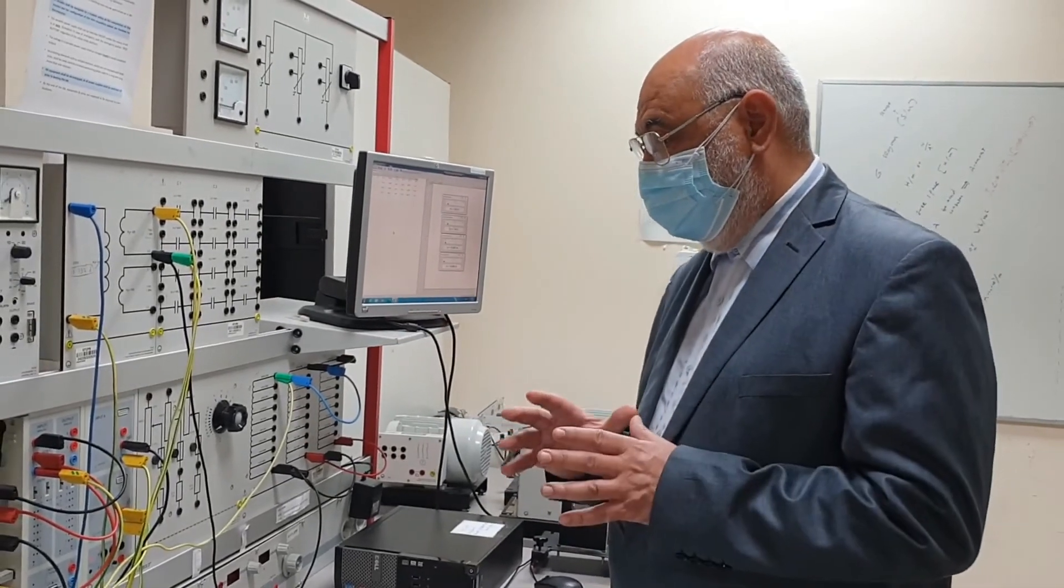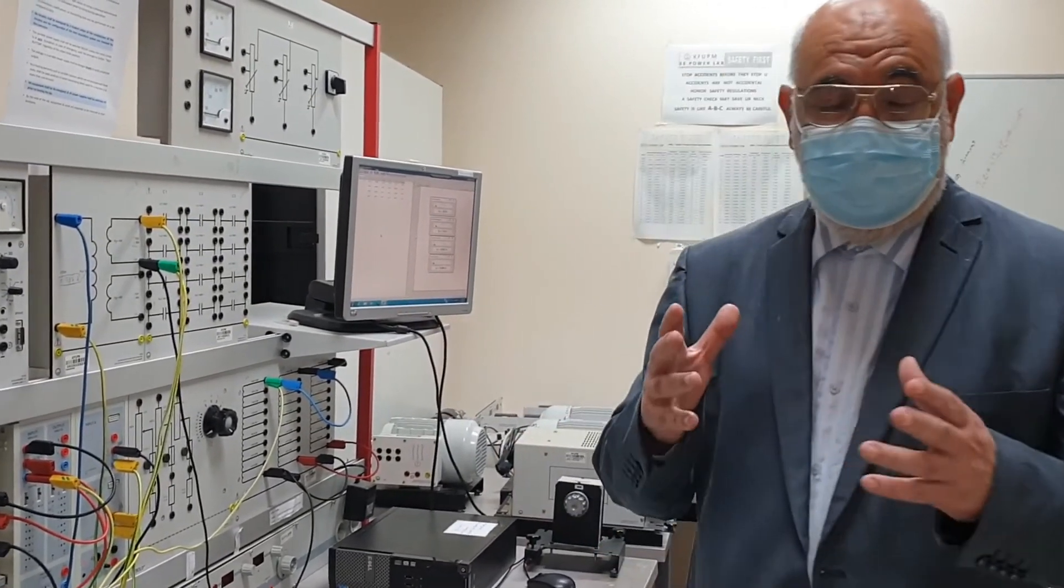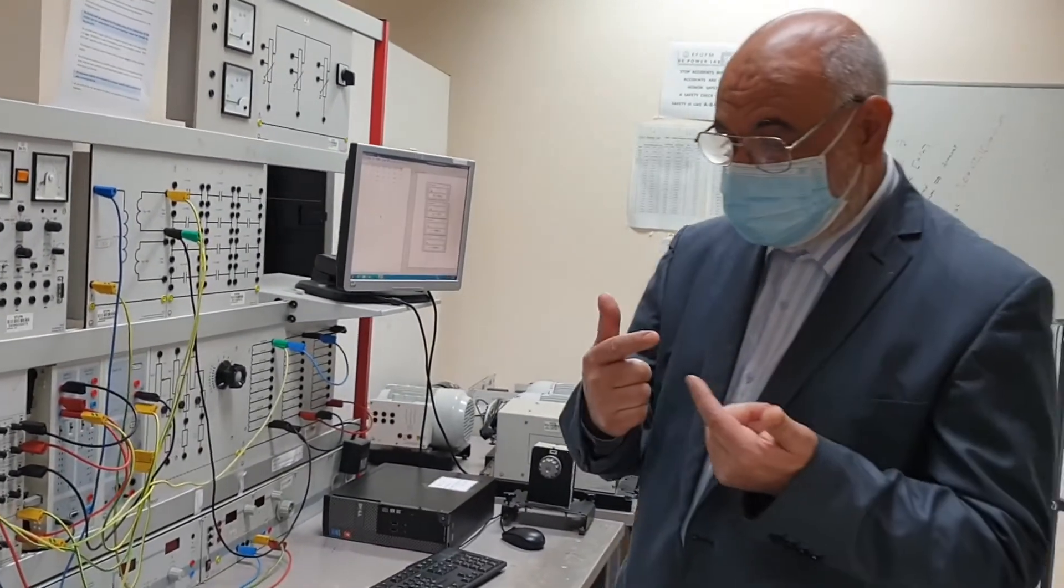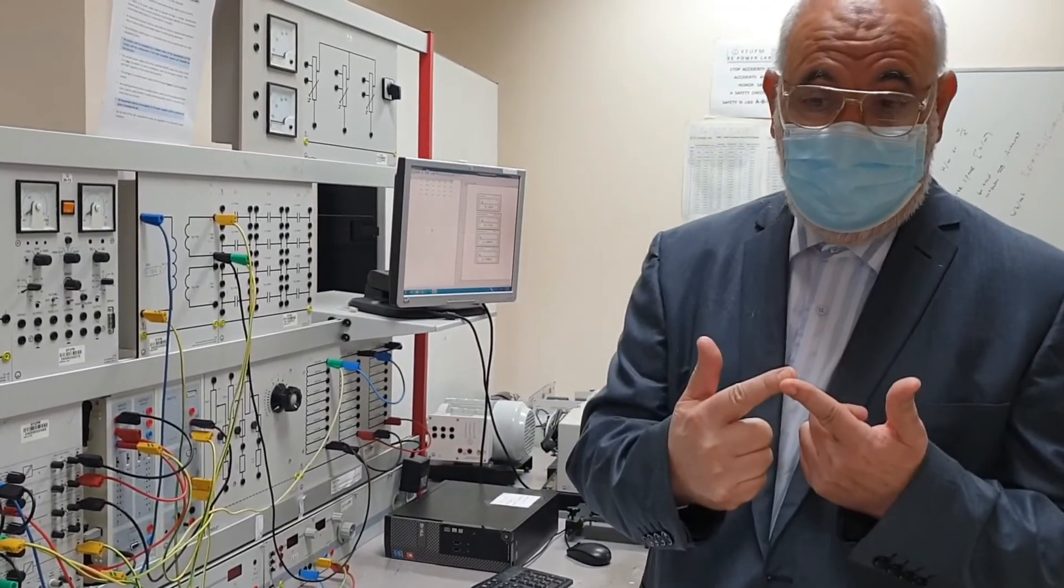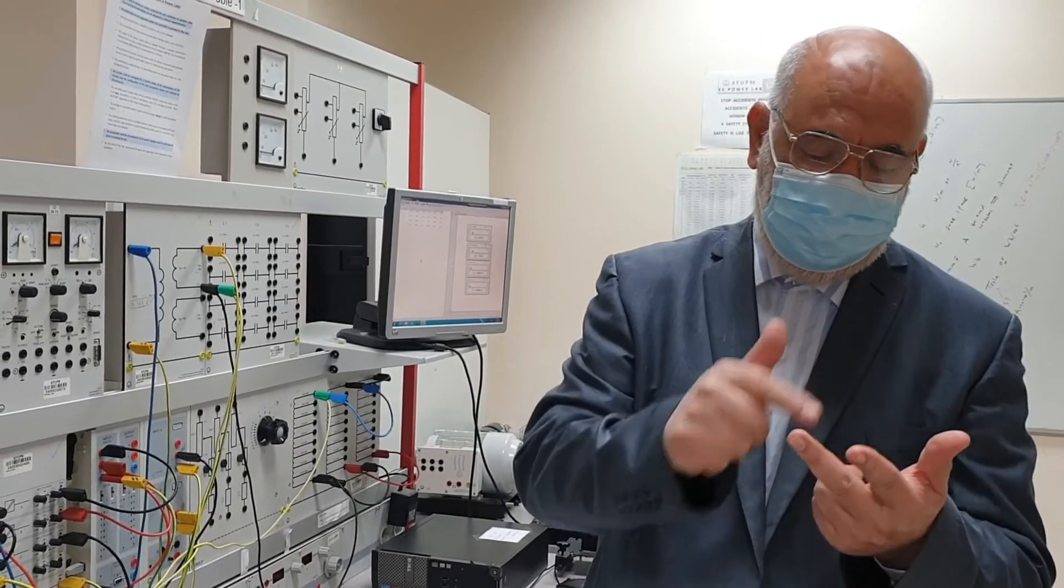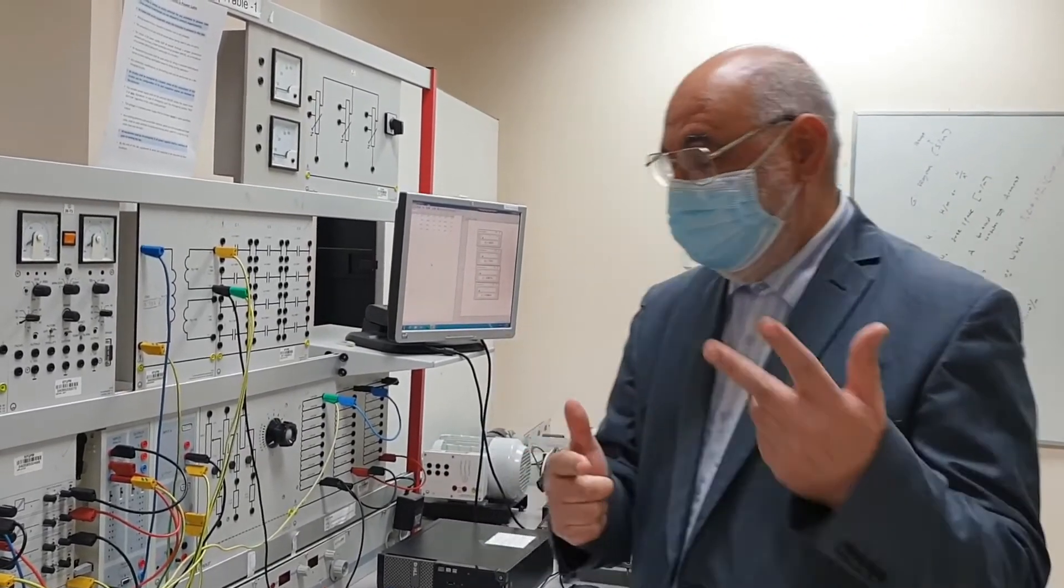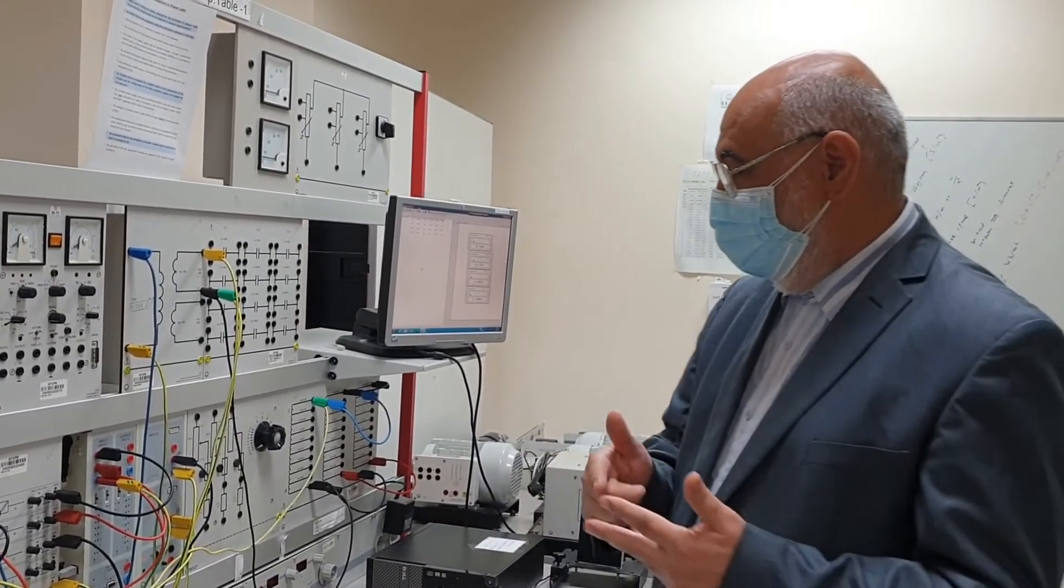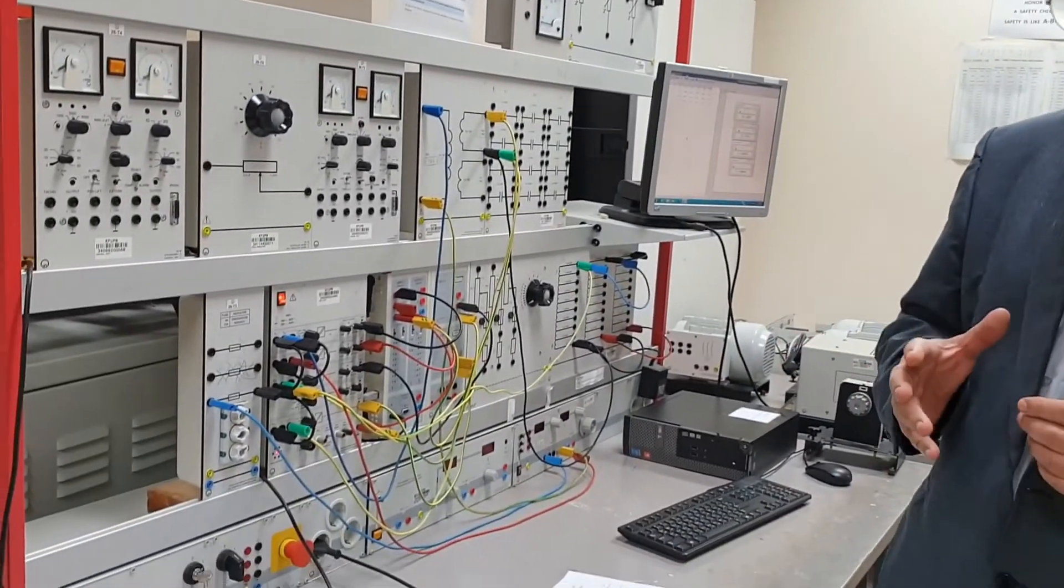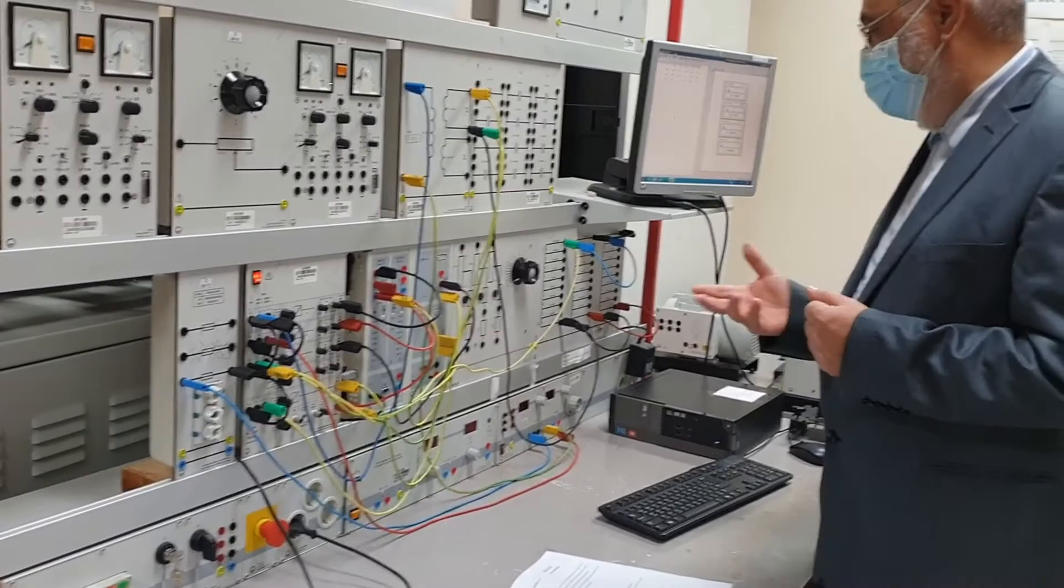Now the main issue for a transformer, there are three major issues. The voltage regulation is one important issue. The losses is an important issue, and then, consequently, of course, the losses. If you talk about losses, then you talk about efficiency. So these are two major issues, and then the drop inside, which is linked directly to the voltage regulation.